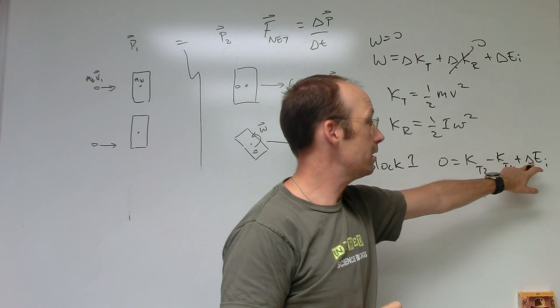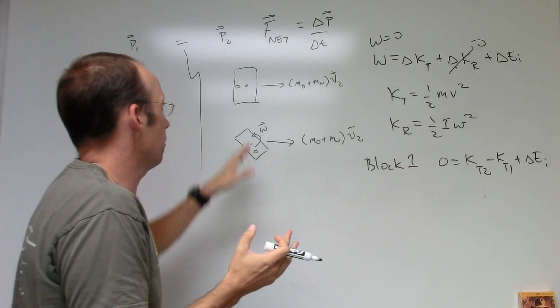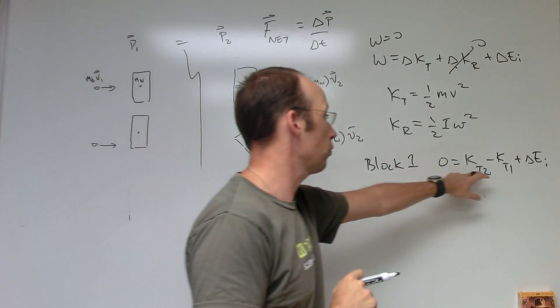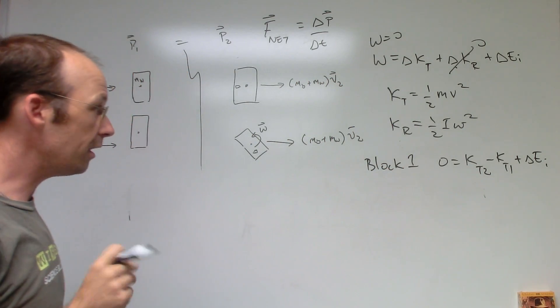And so what that means is that there has to be an increase in thermal energy or something in the block. There's an increase in energy in the block in order for the total change in energy to be zero for the system. And that's block one.